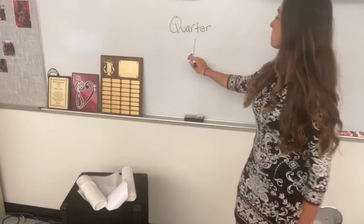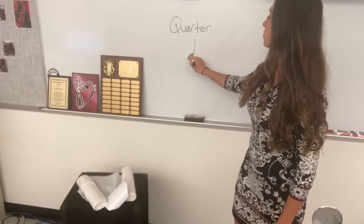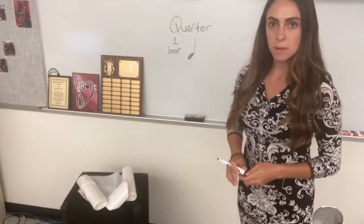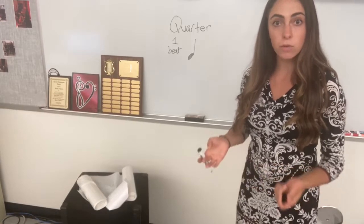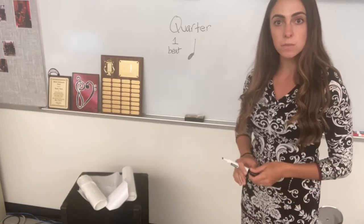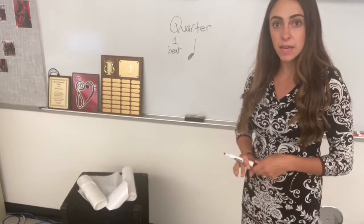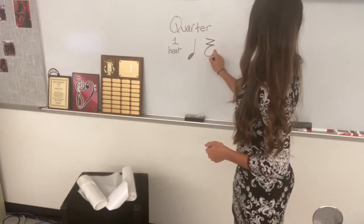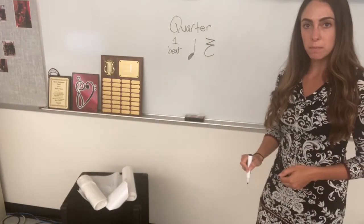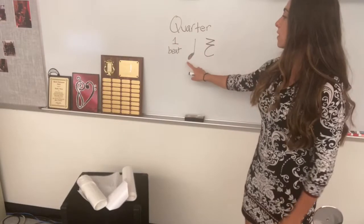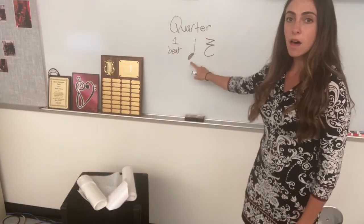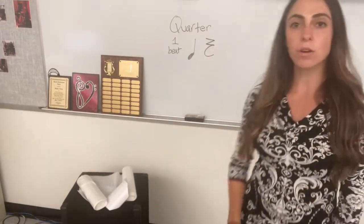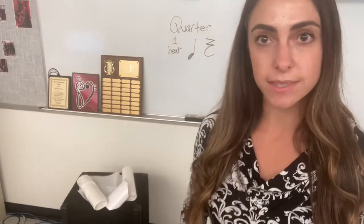Those notes are called quarter notes because they take up a quarter, or a fourth, of the measure. A quarter note is your most common note — take a moment to draw one. If a quarter note is worth one beat, you can probably guess that a quarter rest would also be a one-beat thing. A quarter rest is also worth one beat, and to draw it you draw a Z attached to a C.